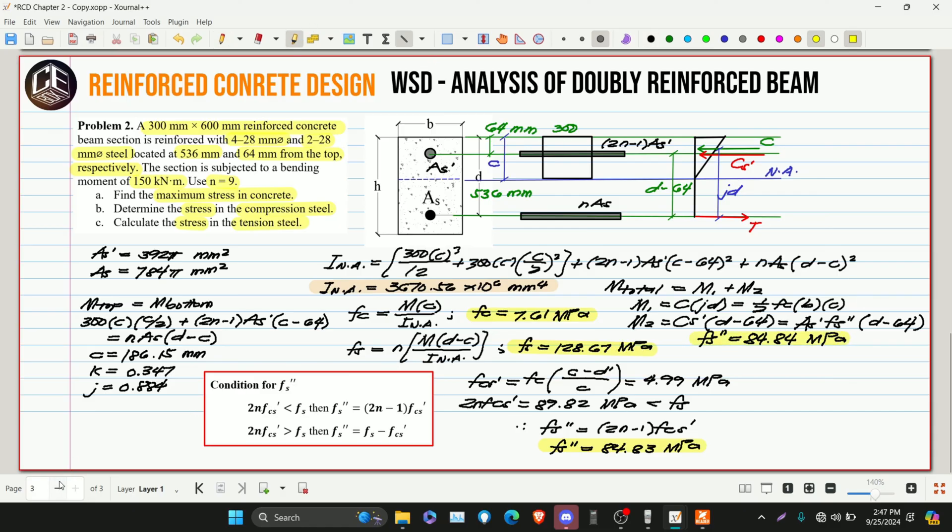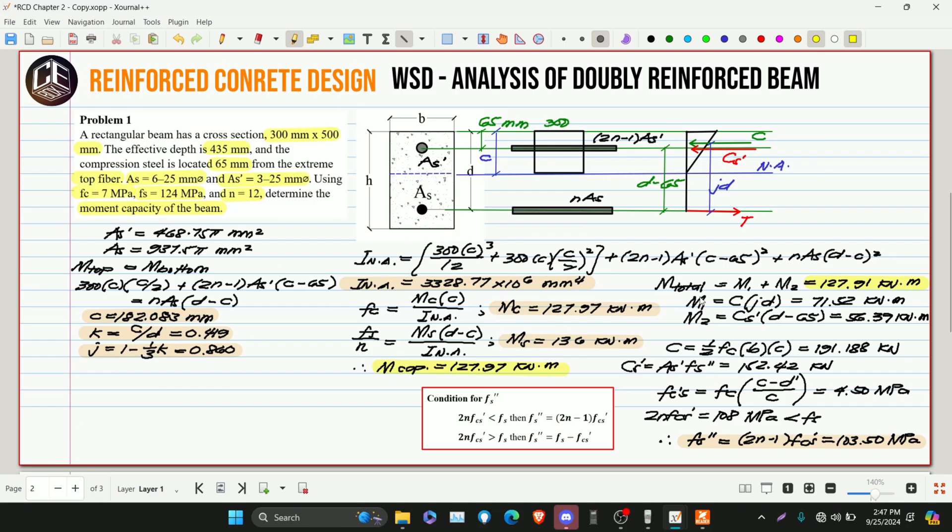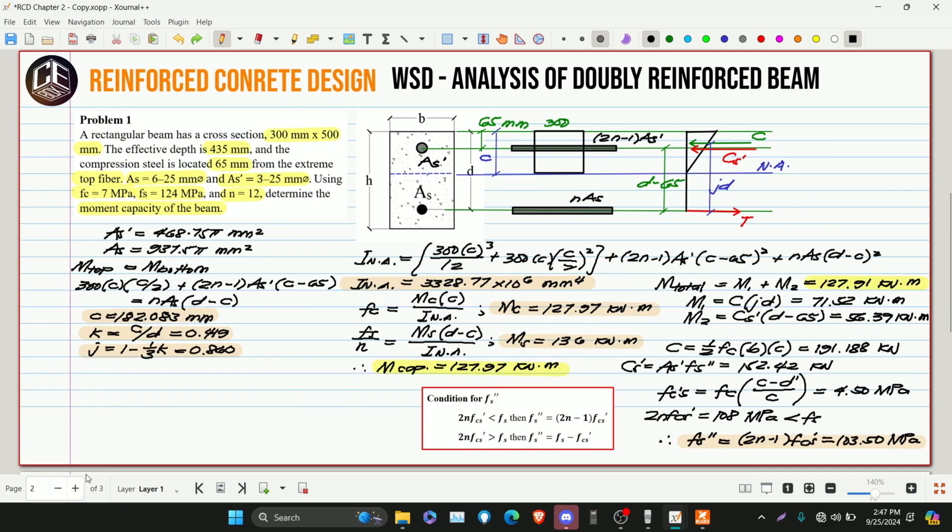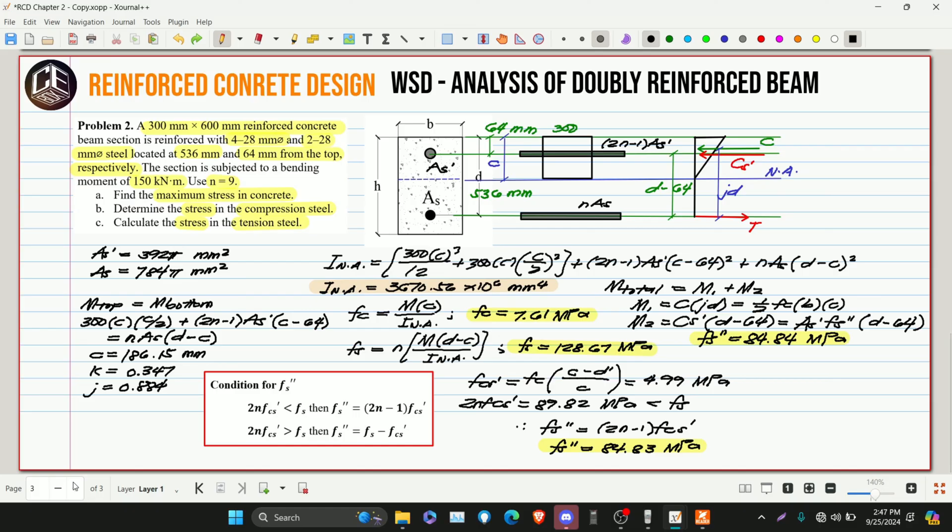So guys, in our problem number 1 and 2, whatever you use - whether bending stress or this concept using force or using factor K and J - the results are still the same. And you saw in our problem number 2, the stresses were being asked. In problem number 1, capacity was being asked, but the same answers are obtained whatever concept or approach you use. So this is our problem number 2 for WSD analysis of doubly reinforced beam. That's it, guys. I hope you enjoyed and learned a lot from the discussion of concepts and problem sets of CBOX video tutorials. But of course, don't forget to subscribe and hit the bell icon for notifications and updates on our YouTube channel. Thank you for watching, God bless everyone. Bye!